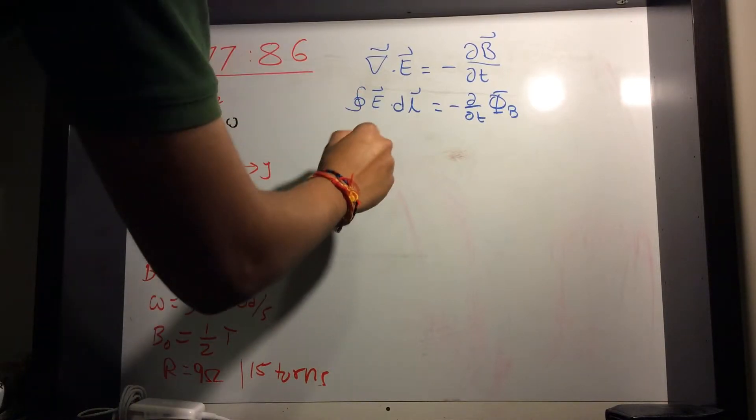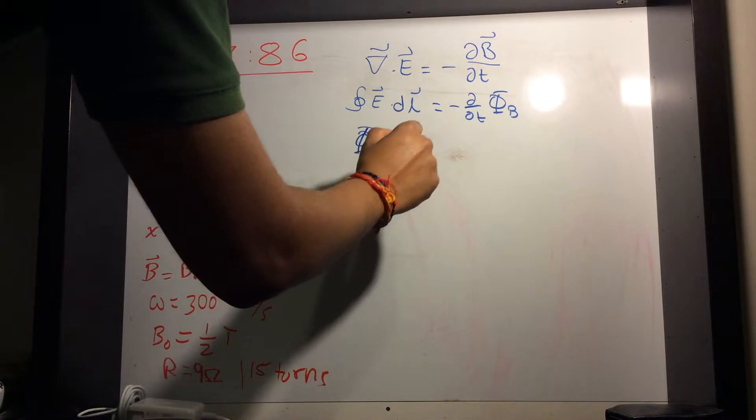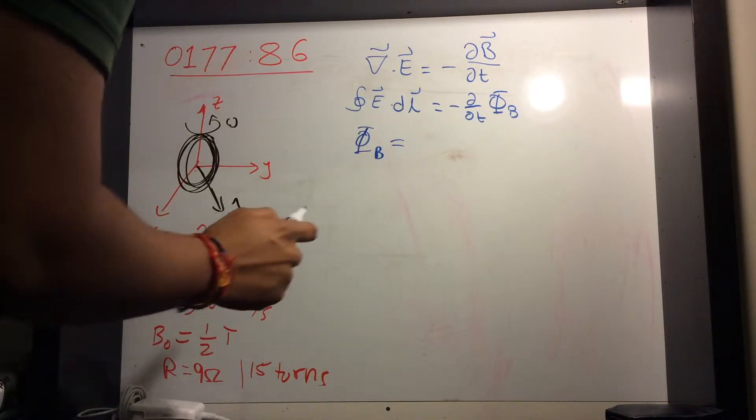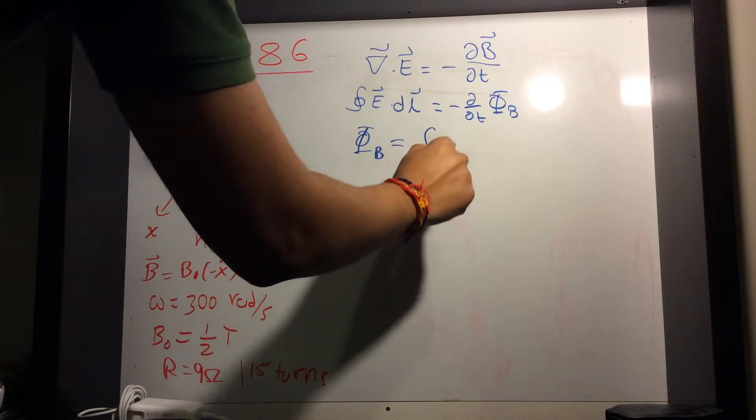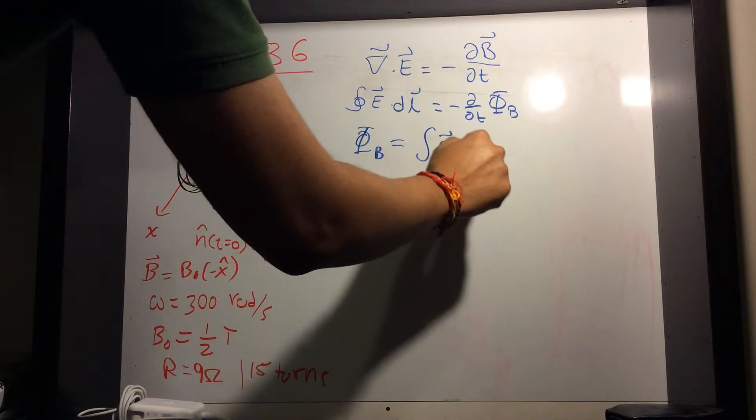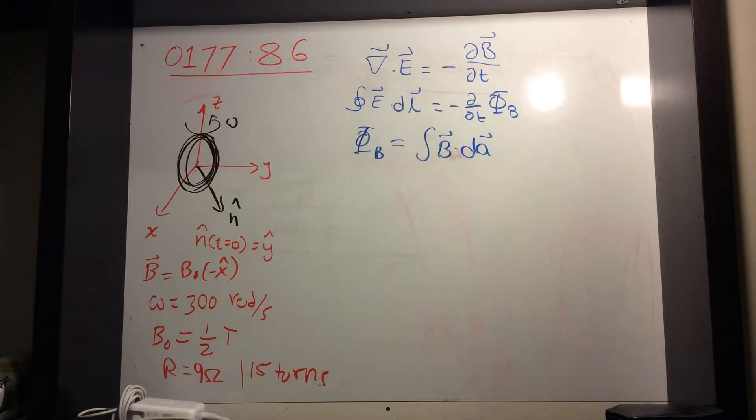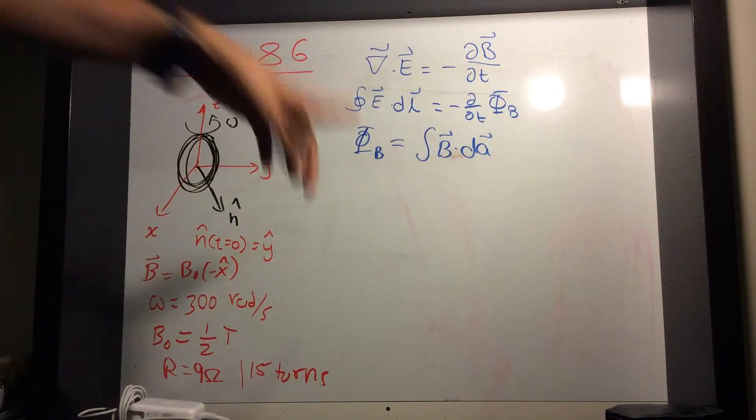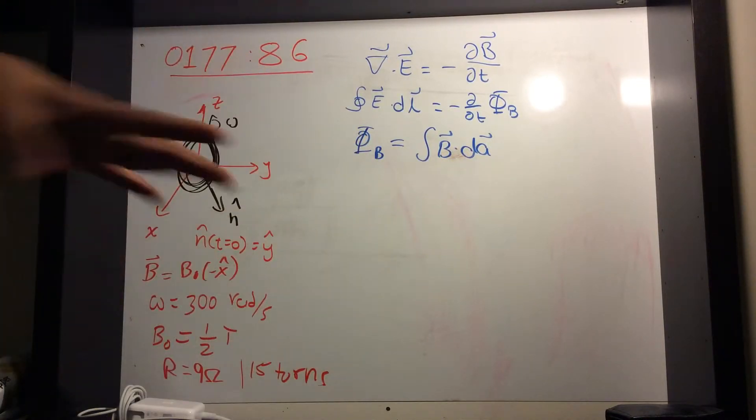But this says a closed loop integral around a circle or any path is equal to the changing magnetic flux that flows through it. Now magnetic flux is integral of B dot dA across some surface. Now, note this dot product.